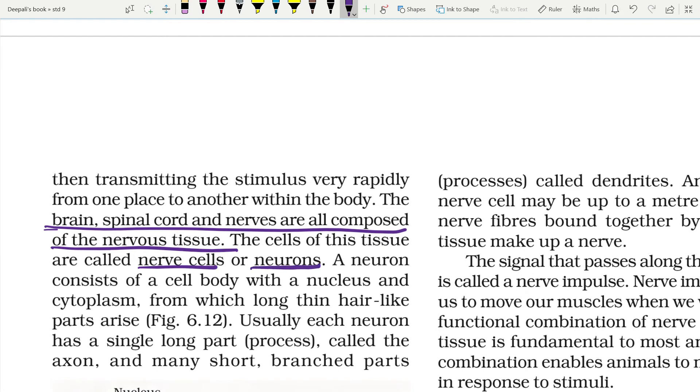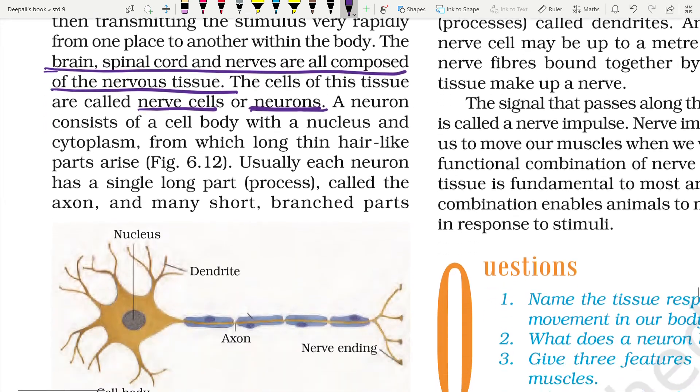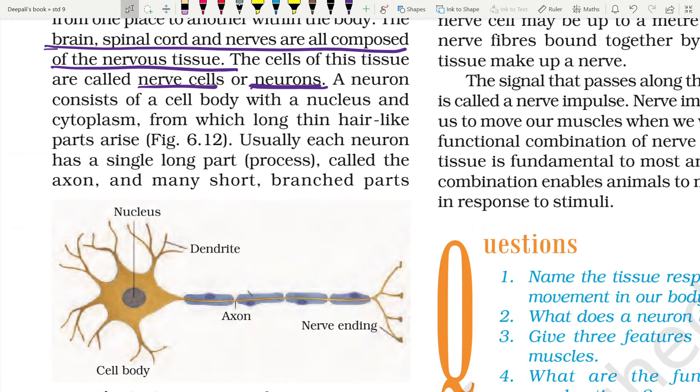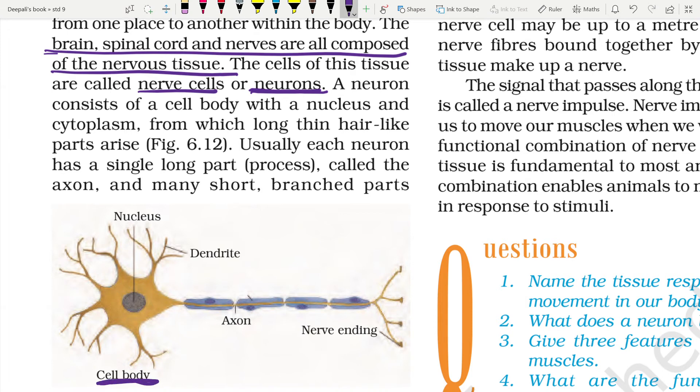The brain, the spinal cord, and the nerve cells are composed of these nervous tissues. The cells of this tissue are called nerve cells or neurons. A single cell is called a neuron. A neuron is made up of, as you see in the figure, the cell body. The cell body has a nucleus and it is also called soma, and cytoplasm is filled in this.